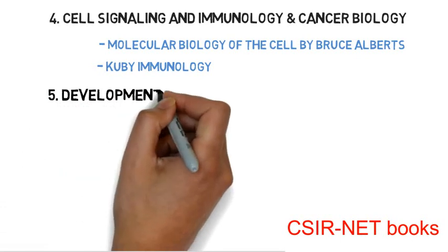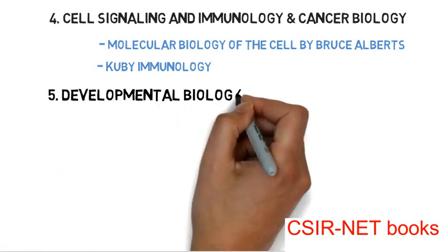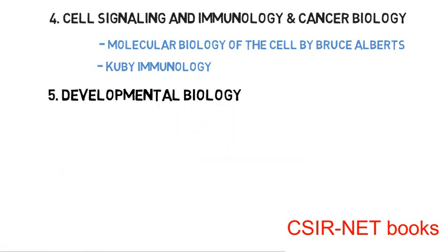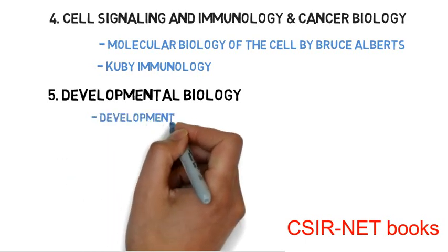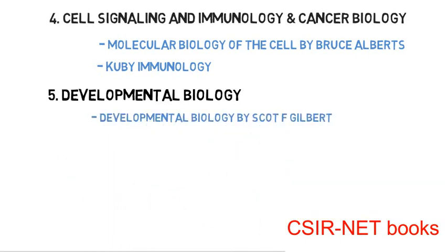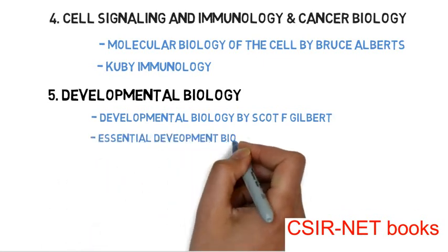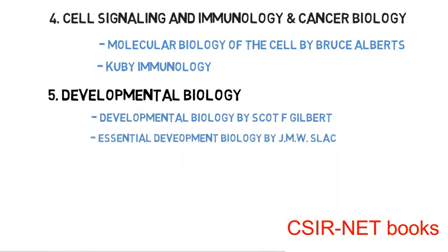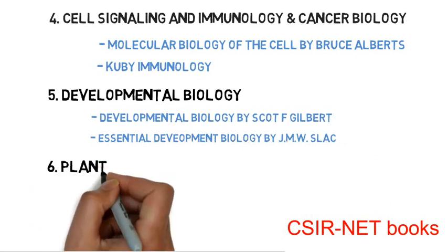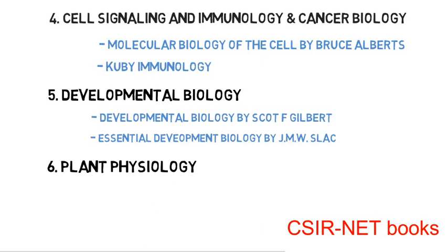For the fifth topic, that is developmental biology, you have to follow Developmental Biology by Scott F. Gilbert, and the second book, Essential Developmental Biology by Slack. For the sixth subject, that is plant physiology.